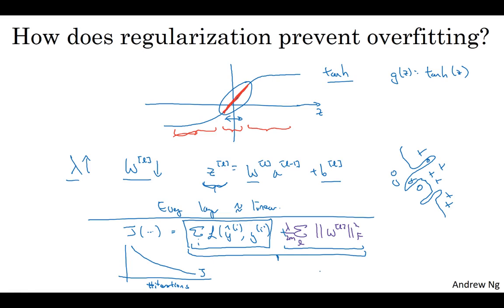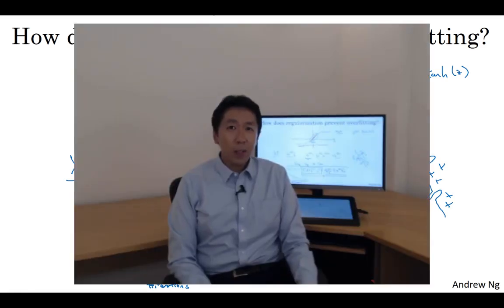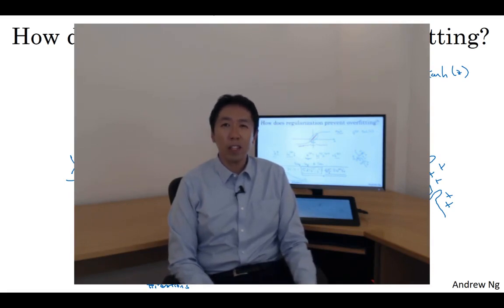Otherwise, you might not see J decrease monotonically on every single iteration. So that's it for L2 regularization, which is actually a regularization technique that I use the most in training deep learning models. In deep learning, there's another sometimes used regularization technique called dropout regularization.